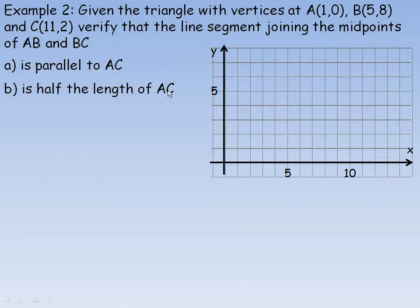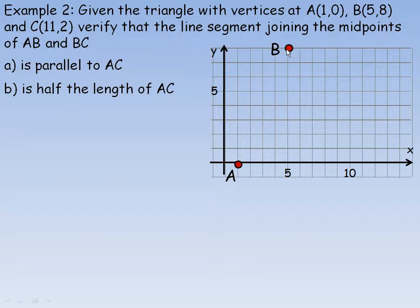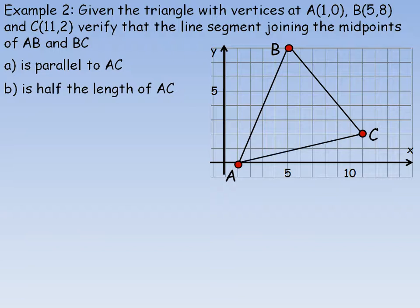One more example on page 2. We're given this triangle with vertices at A, B and C. So let's draw the triangle first. There's point A at (1, 0). B is at (5, 8). And then C over here is at (11, 2). We'll draw the three line segments that make our triangle. Now we're asked to verify that the line segment joining the midpoints of AB and BC is parallel to AC, the other side of the triangle, and half its length. So let's find these midpoints first.